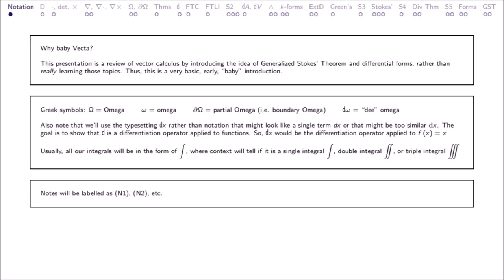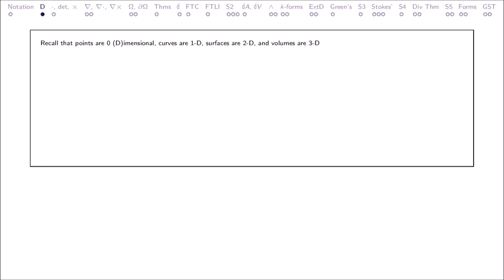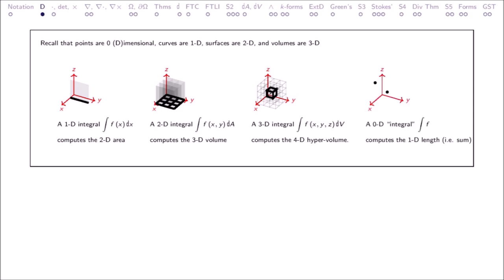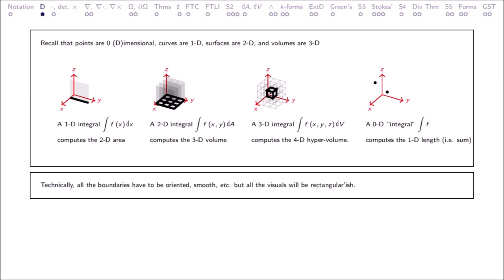Notes will be labeled as n1, n2. Recall that points are 0-dimensional, curves are 1-dimensional, surfaces are 2-dimensional, and volumes are 3-dimensional. A 1D integral computes the 2D area. A 2D integral computes the 3D volume. A 3D integral computes the 4D hypervolume. A 0D integral computes the 1D length. Technically, all the boundaries have to be oriented, smooth, and so on, but all the visuals will be rectangular-ish.